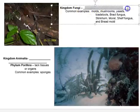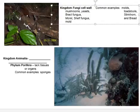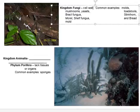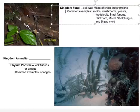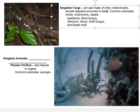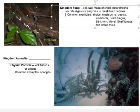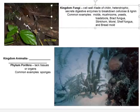Kingdom Fungi is another group that isn't a big player in the marine world. Fungi in general have a cell wall made of a polysaccharide called chitin. They are heterotrophic. They secrete digestive enzymes that break down cellulose and lignin — two key components of plants. In the marine world there are some fungi we'll want to explore, but again, it's just not a really prominent group in the marine environment.